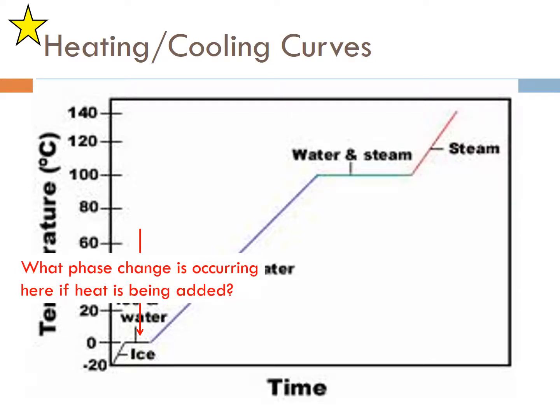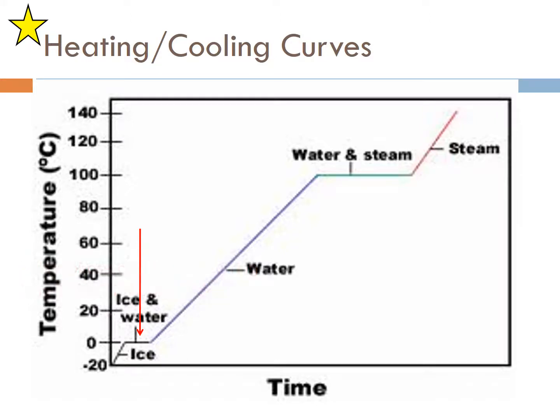What phase change is occurring when you add heat into it? That is melting. Adding heat, ice is going to start to melt into liquid water as you can see there. It has water all the way up. You can see the temperature starts to rise because you're in one phase. Only in one phase you'll have a temperature increase.